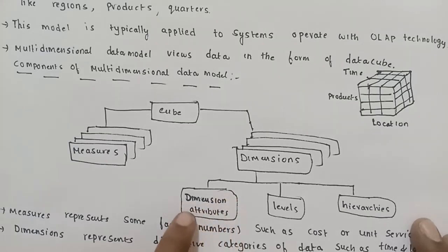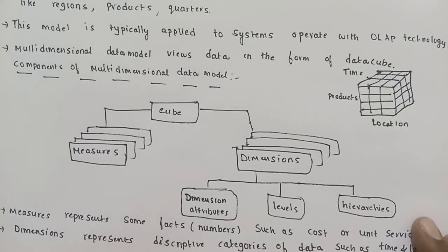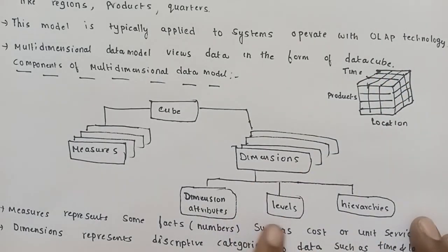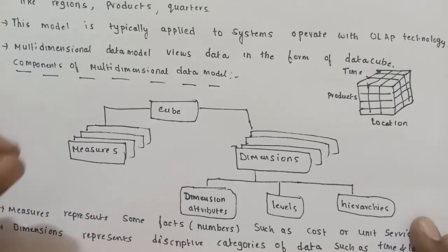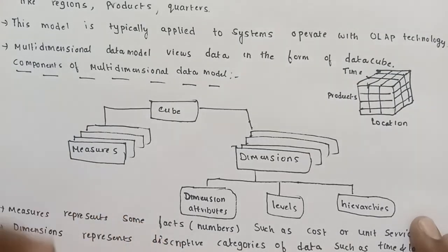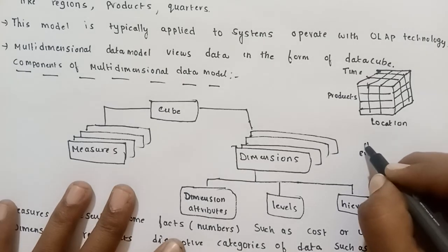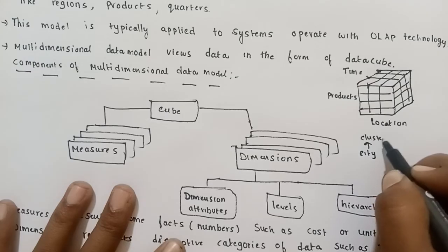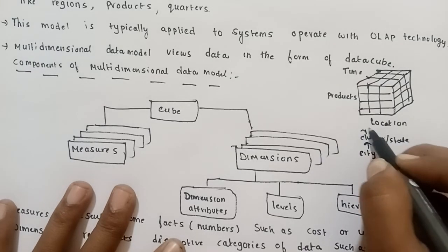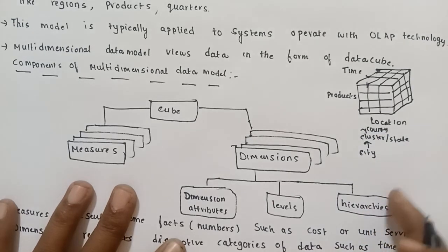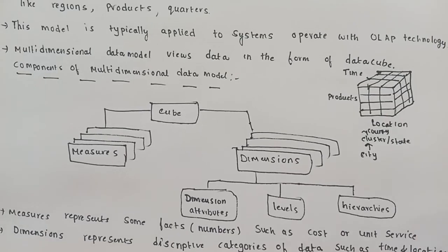Dimensions include dimension attributes, levels, and hierarchy. Dimension attributes include location, products, and time. Levels divide the dimension — for example, quarter one, quarter two, quarter three, quarter four. Hierarchies represent data in a hierarchical way: city, branches, state, and country. These are the components of the multi-dimensional data model.